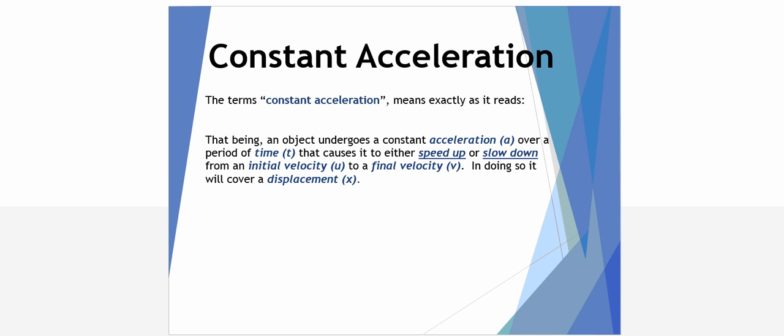First of all, constant acceleration, as the name suggests, is a scenario whereby an object undergoes a constant acceleration over a period of time. Acceleration can either mean to speed up or to slow down. There's a story, and the story commences with initial velocity. There's a period of either acceleration or deceleration, in the case of slowing down, and then you finish the story with a final velocity. Throughout this duration, there will be displacement that's covered as well.